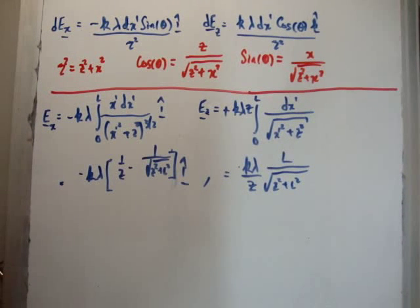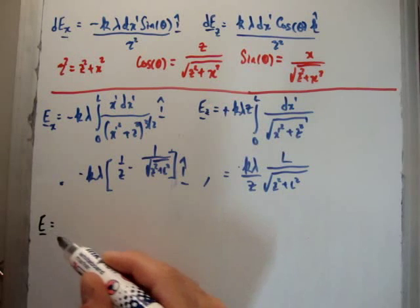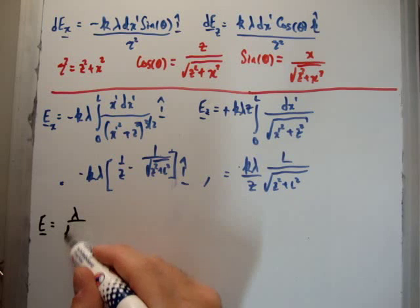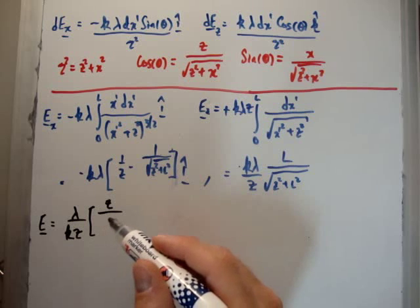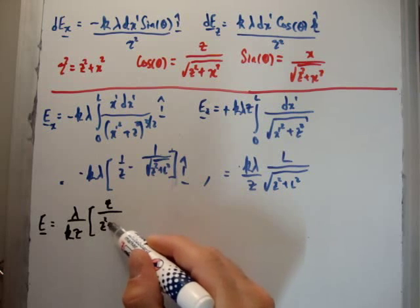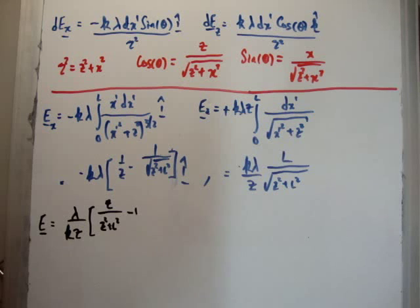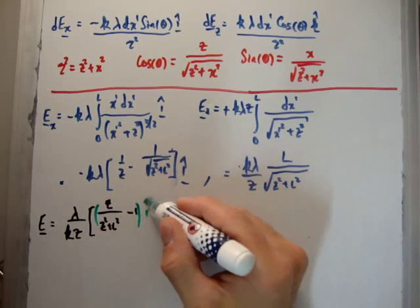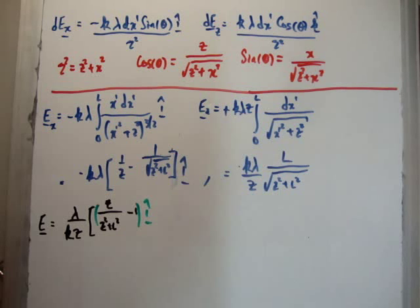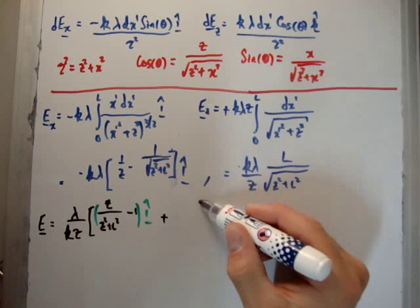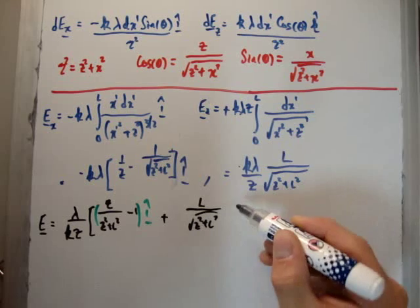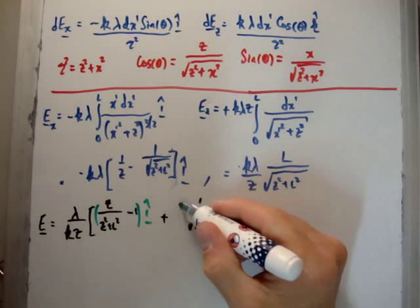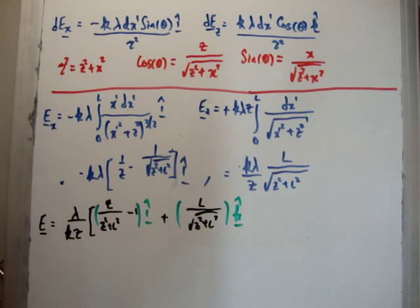Okay and finally just for completeness let's put them all together. We find the total electric field is equal to λ/k times z outside of [z/(z² + L²) - 1] in the i-hat direction, and we also have L/(z² + L²) in the k-hat direction. Okay and close it off there.